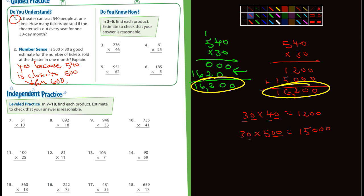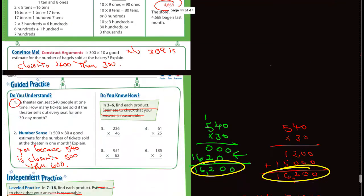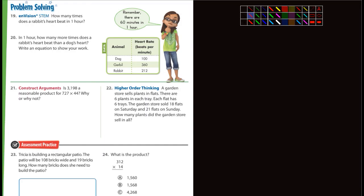Okay, 3 through 6, find each product, estimate to check to see that your answer is reasonable. I'm not worried that you estimate anything. Just go ahead and solve each one. 7 through 18, find each product, estimate to check to see if your answer is reasonable. I'm not worried about you doing that. So you guys should be able to do all those. Let's go to the problem solving, take a quick peek.